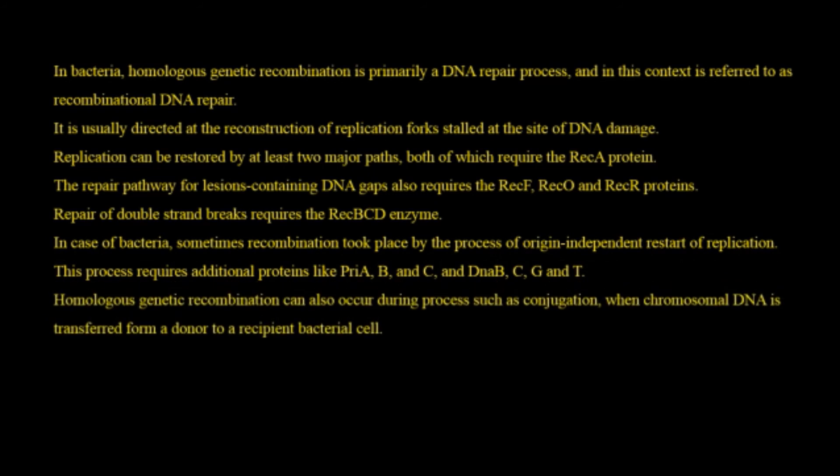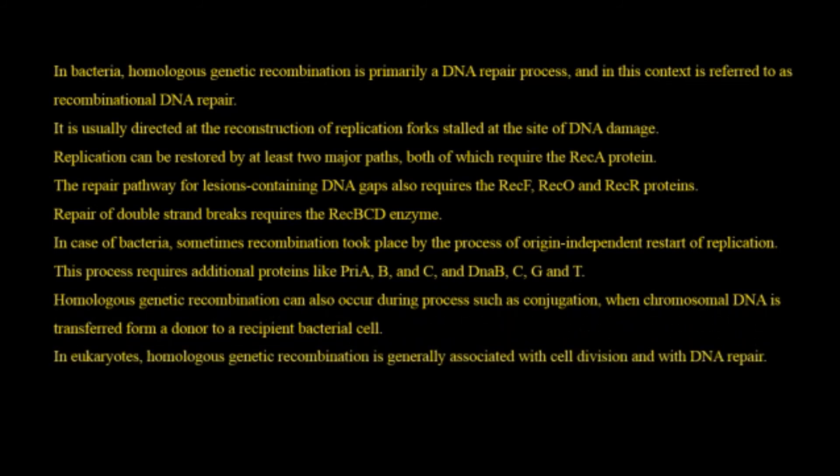Homologous integrative recombination can also occur during processes such as conjugation, when chromosomal DNA is transferred from a donor to a recipient bacterial cell. In eukaryotes, homologous integrative recombination is generally associated with cell division and with DNA repair.